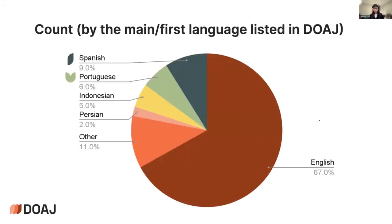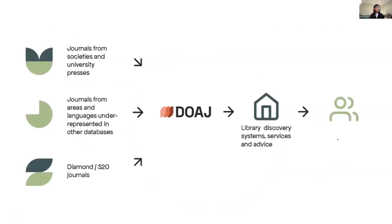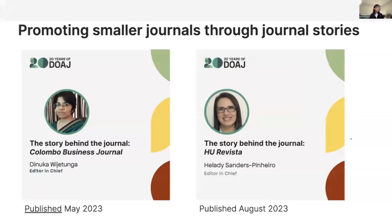Spanish and Portuguese are the second-most used languages in the journals we index, reflecting the strong participation of Latin America. Journal editors have reported benefits from being indexed in the DOAJ, including increased traffic to their websites and increased collaboration with other scholars.